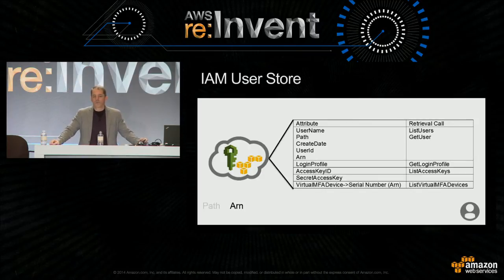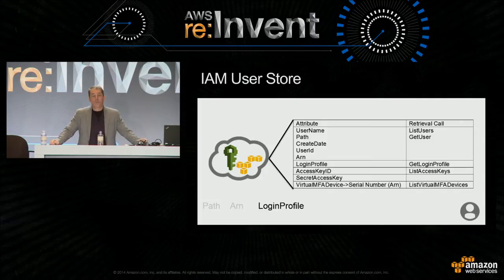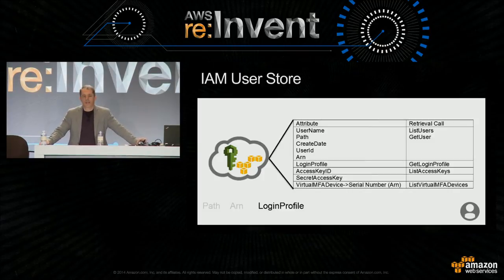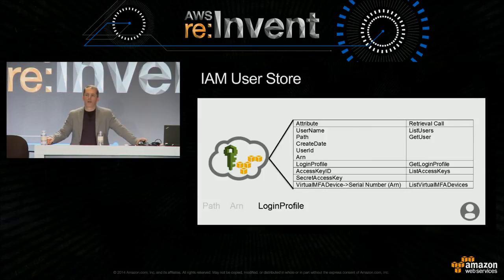There are a couple of other attributes: the ARN, which is the Amazon Resource Name—that's immutable for the lifetime of the user. The login profile is interesting too. If you do a read on login profile, you just get the last date the password was set—important if you're thinking about synchronizing passwords or using AWS as an IDaaS capability. You won't get a look at the actual password, but if you do a create login profile or an update login profile, you can set the password. From a read perspective, you just get the date.